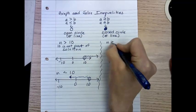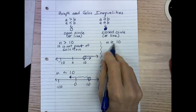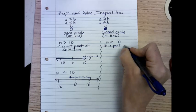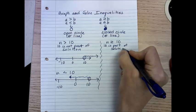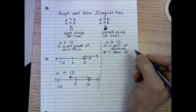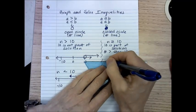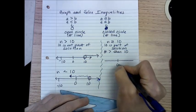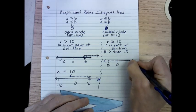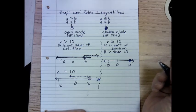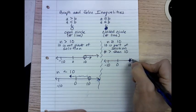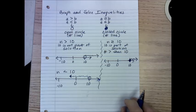For our other inequalities: if we have N is greater than or equal to 10, then 10 is equal to 10, so 10 is part of the solution, as well as numbers greater than 10. To indicate that on the number line, we use a closed circle — we color it, shade it all in. The numbers that are greater than 10 are to the right, so we need an arrow going to the right.